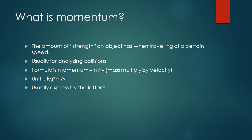What is momentum? Well, momentum is the amount of strength an object has when traveling at a certain speed. It's usually used for analyzing collisions. The formula for momentum is momentum equals mass multiplied by velocity, or p equals mv. The unit is usually kilograms times meters per second, and momentum is usually expressed by the letter p.